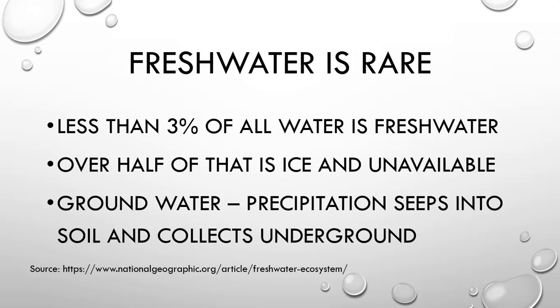Freshwater is pretty rare — less than 3% of all water is freshwater. Of that 3%, half of it we can't even use because it's ice in glaciers and icebergs; the biggest ice areas are Greenland and Antarctica. Of all precipitation, some collects as groundwater. Surface water includes ponds, lakes, and streams, while groundwater goes down into the soil until it hits an impermeable rock layer. That water collects on top of the rock, forming aquifers, which are a major water source for humans used for irrigation and cities.